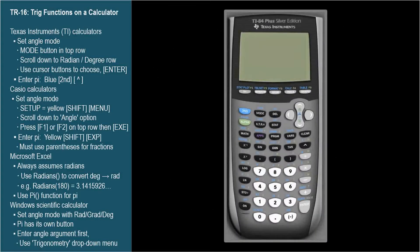For most Texas Instruments calculators, set the degree or radian mode using the mode button on the top row. Scroll down to radians or degrees, highlight the desired mode, and press the enter key, then clear.